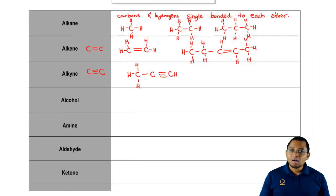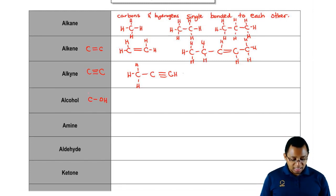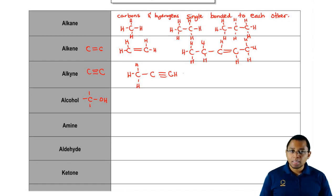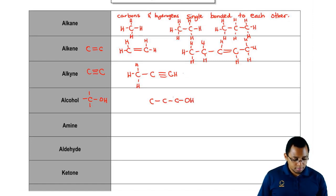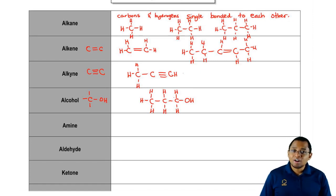An alcohol is when we have a carbon that is single bonded to an OH. That carbon in turn is single bonded to other things — maybe hydrogens, maybe other carbons. That's an alcohol. The fact that we have a carbon connected to the OH, and that carbon is single bonded to other things, makes it an alcohol.